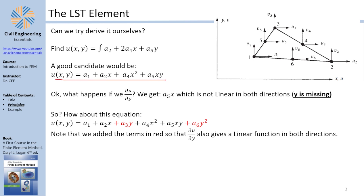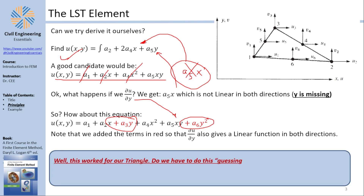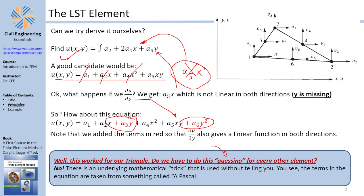To fix this, if you want a perfect candidate you would have to add a Y component and a Y-squared component, so that if you partially derive with respect to Y you get something similar to the required linear form. Now this was done somewhat haphazardly, and for other elements like quads you don't need this guessing game — there is a quick tool called the Pascal triangle, which I'll discuss in the last slide. So we now have our displacement function.